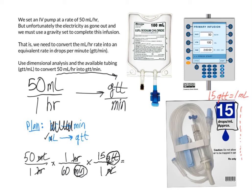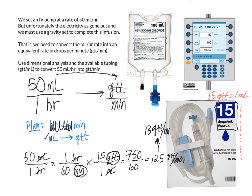So let's go ahead and multiply the numerators. You should get 750 all over 60, which when we do that in our calculator, we should get 12.5. This is drops per minute. Now in a clinical context, we would actually have to set this with our eyes — we would have to count the number of drops every minute. So we would always round this to the nearest whole number, because we're not going to have half a drop. That means we would have to set this infusion to 13 drops per minute.